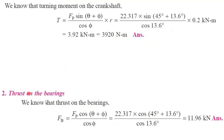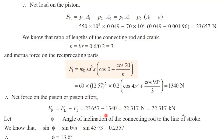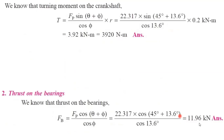The second part is thrust on the bearing, FB. Using the known formula with theta and phi values substituted, we can calculate FB. The result is obtained in kilonewtons.